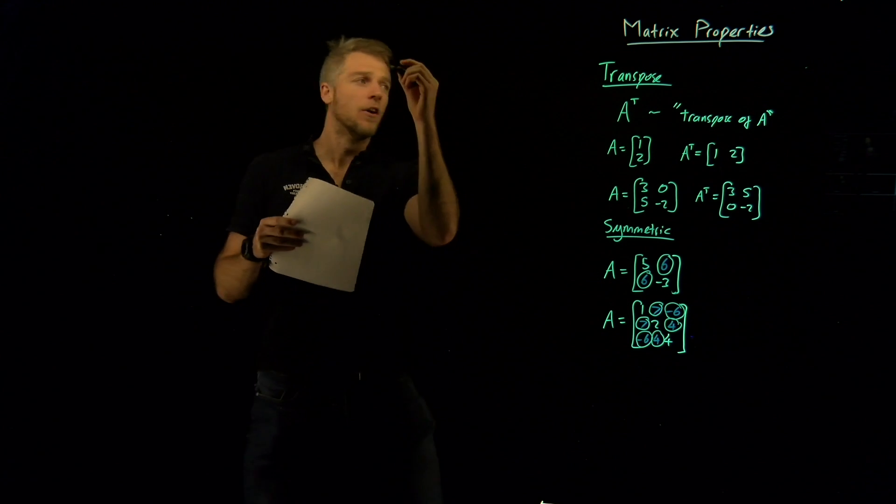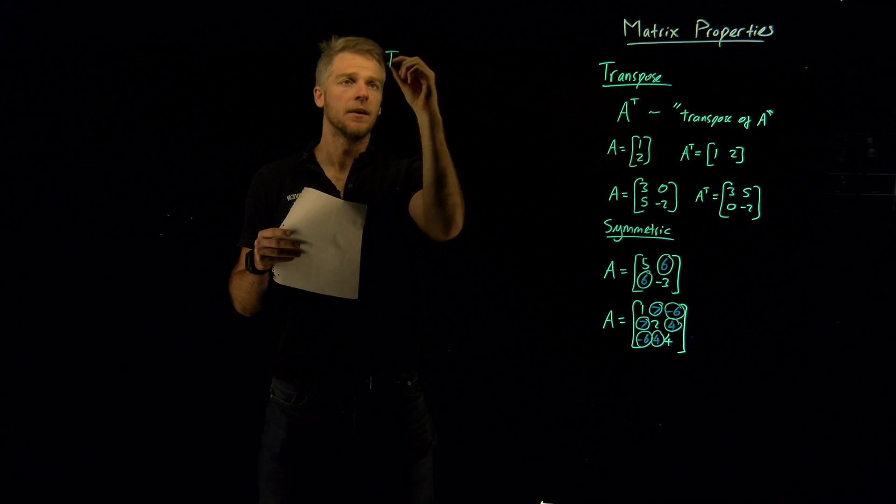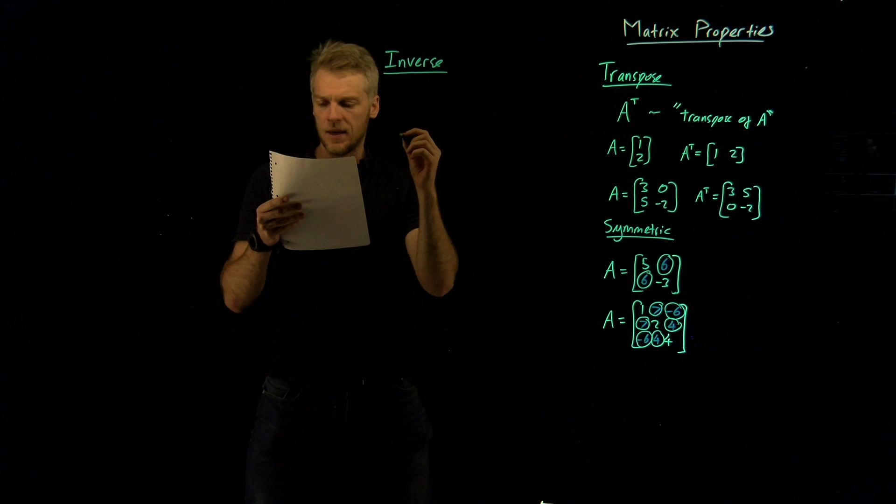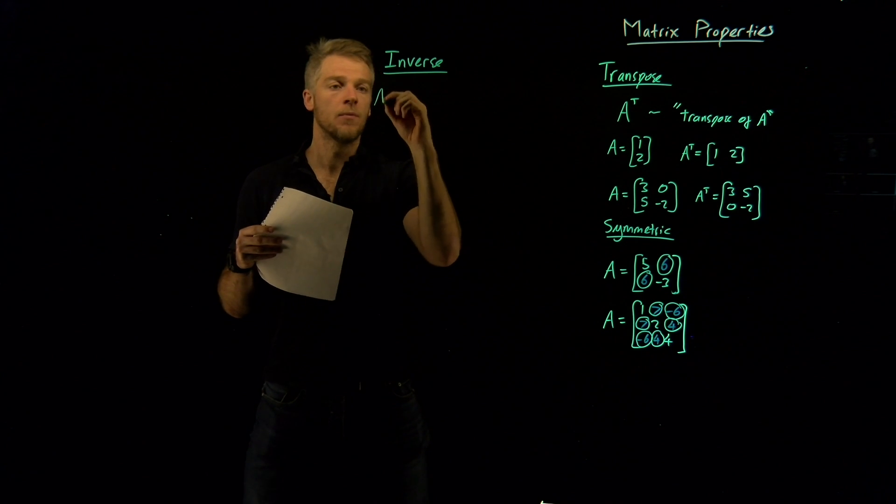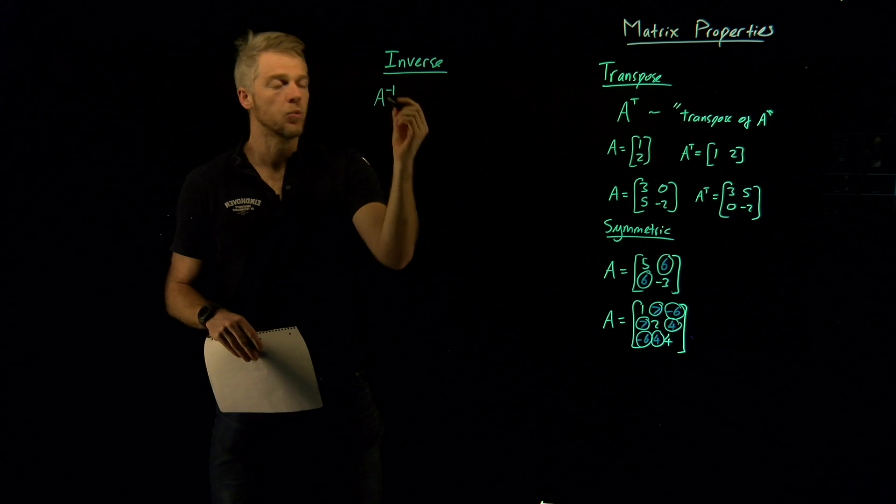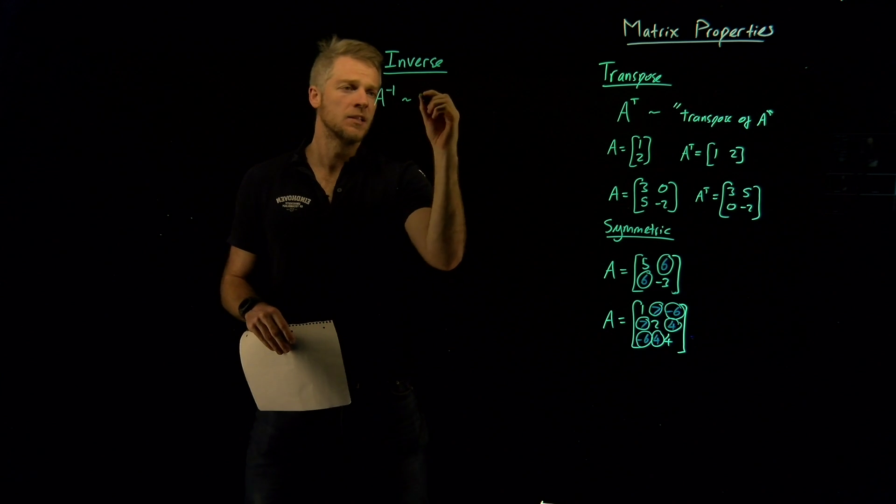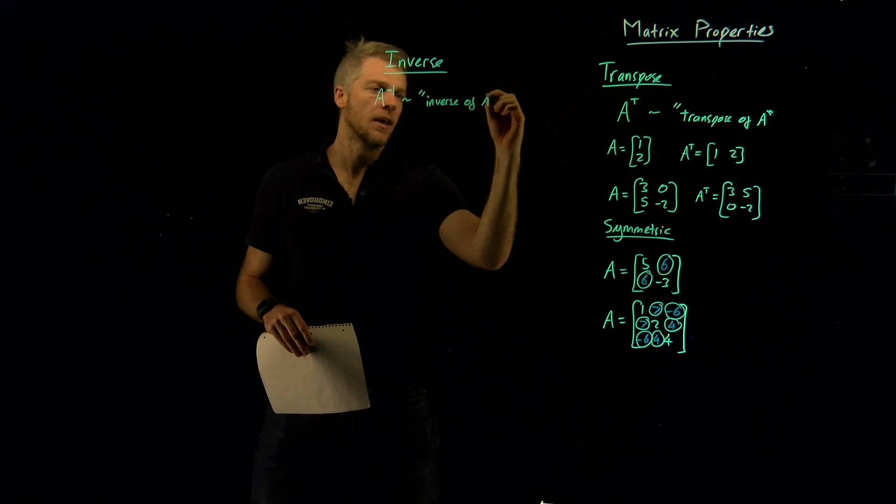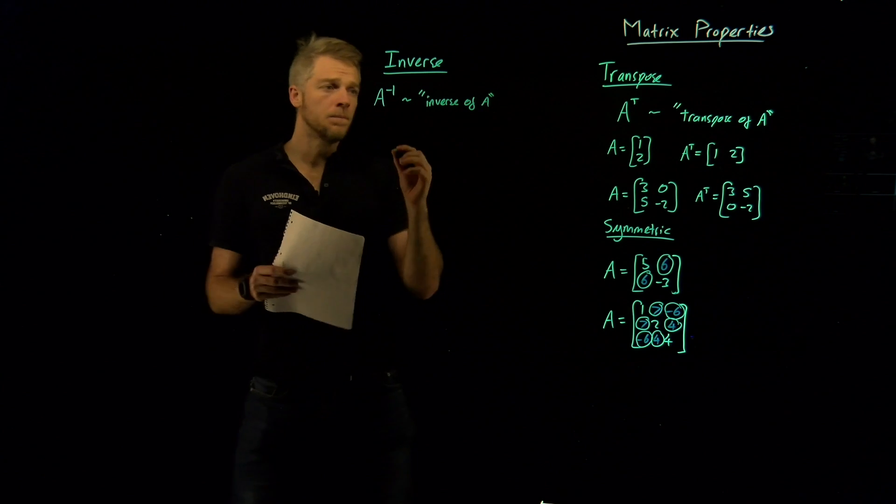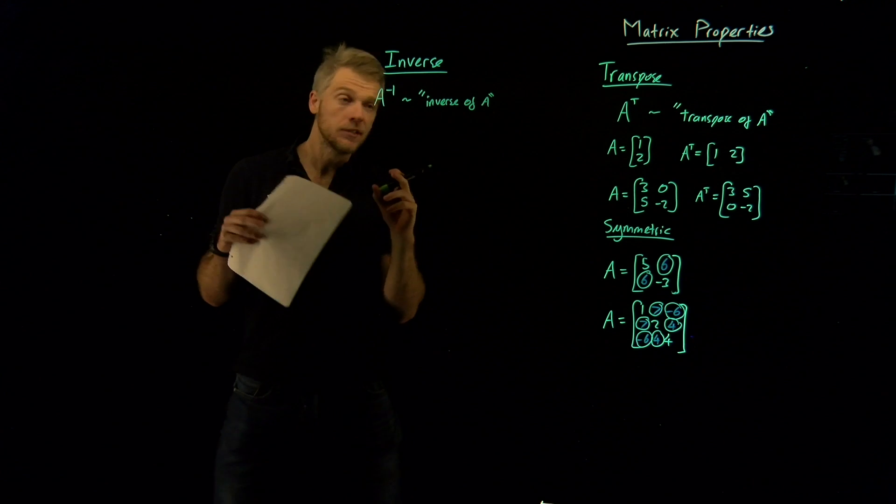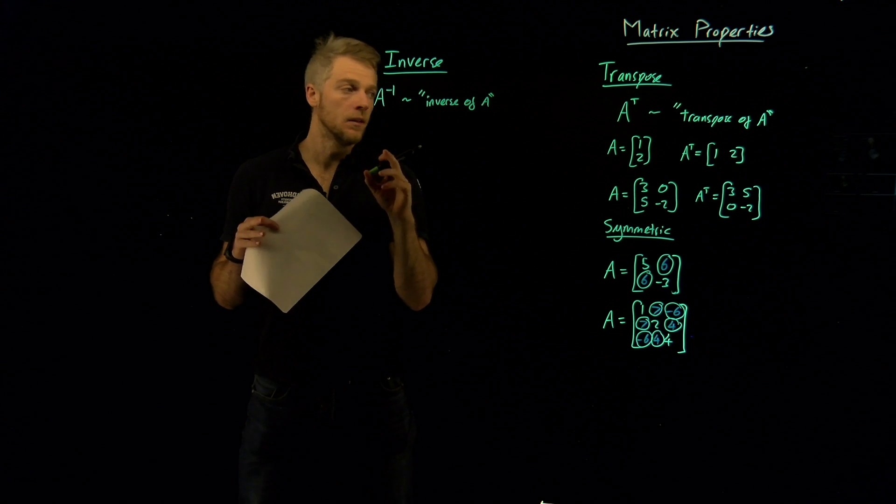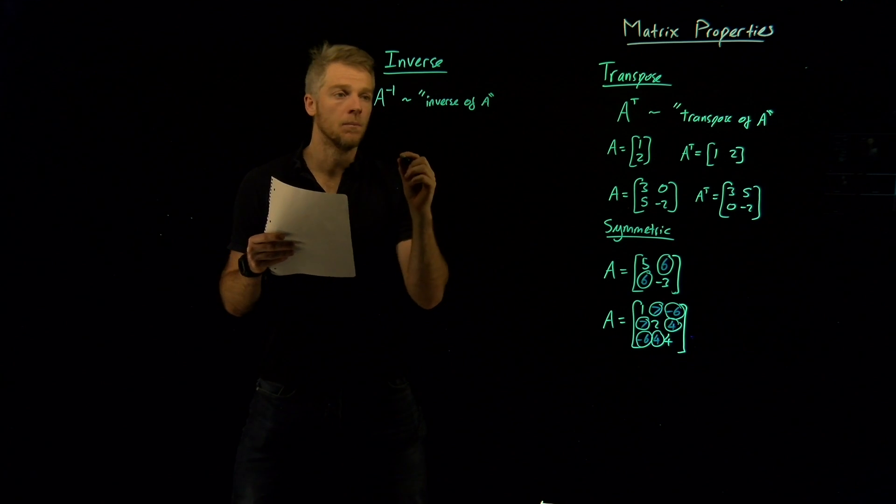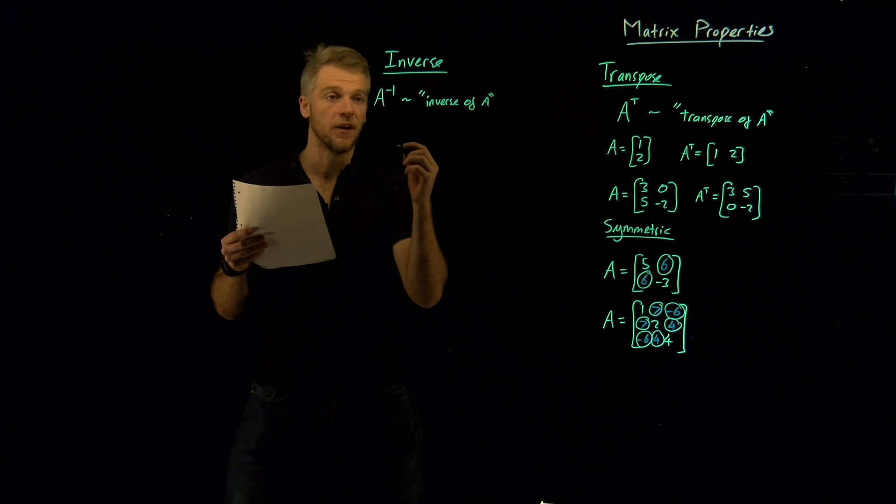Next, I want to talk about the inverse of a matrix, and I'll start writing it here. It's written with a fancy symbol. We write this as A inverse, so with a minus 1 at the top here, and this stands for the inverse of your matrix A. Now, I'll be talking about other types of inverses by the end of this video series, but for now this is just the traditional inverse, and let me describe to you why we use it, or let me try and justify its usage.